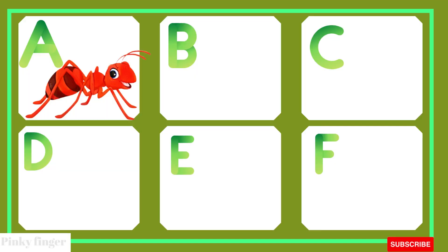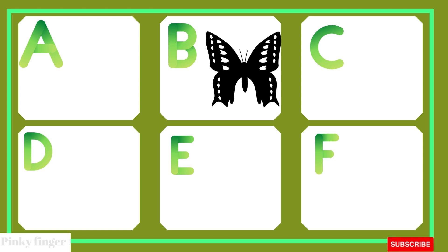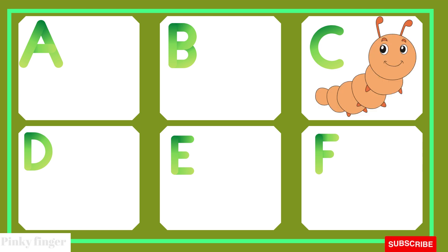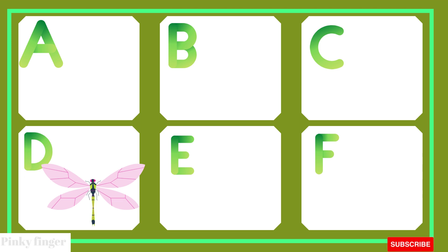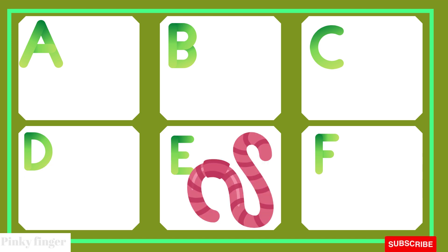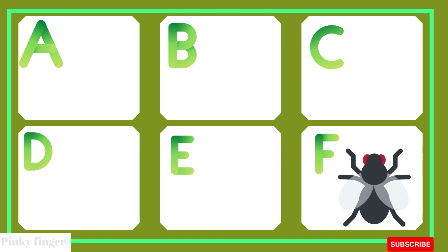A is for ant. Ant. B is for butterfly. Butterfly. C is for caterpillar. Caterpillar. D is for dragonfly. Dragonfly. E is for earthworm. Earthworm. F is for fly. Fly.